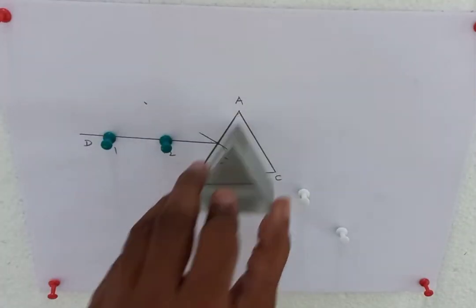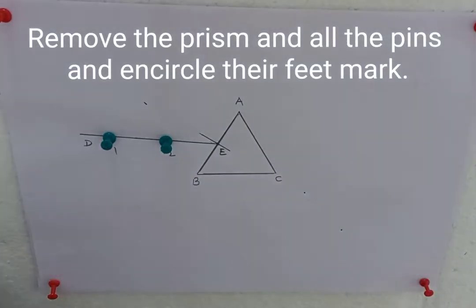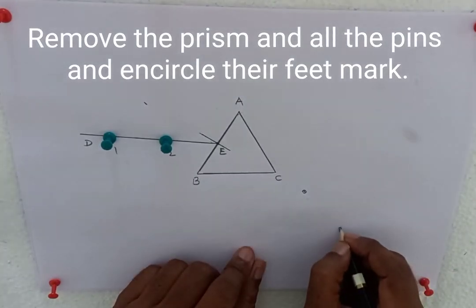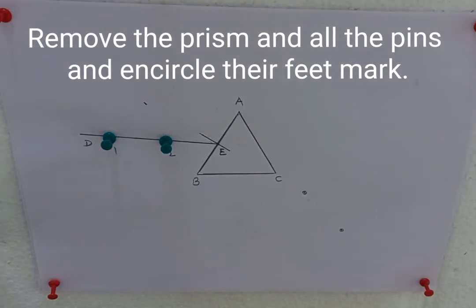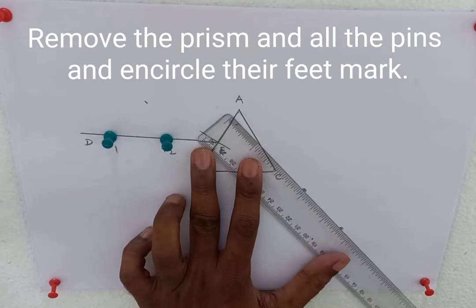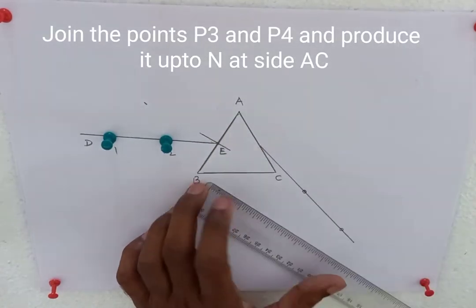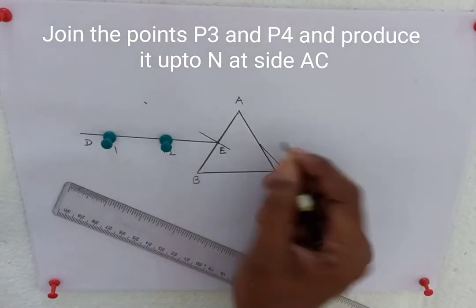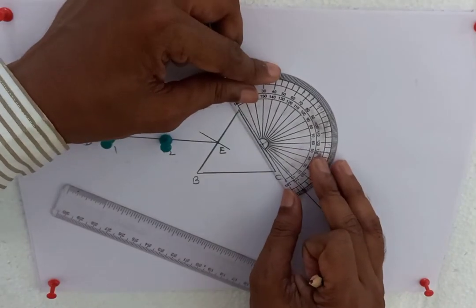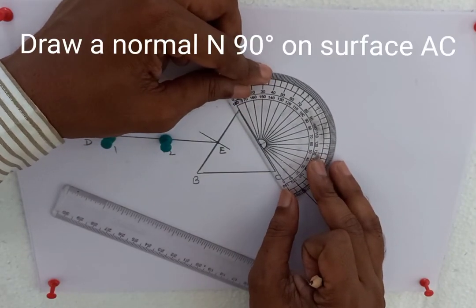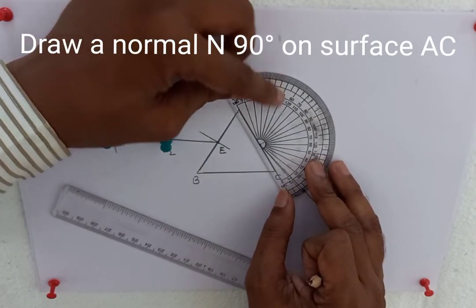It should be seen to be in a straight line. Remove the prism and all pins and encircle their feet marks. Join the points P3 and P4 and produce at AC.